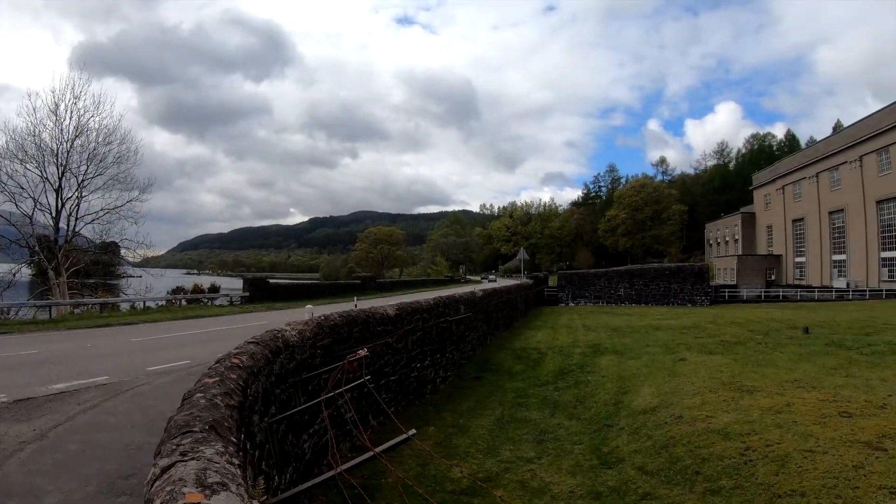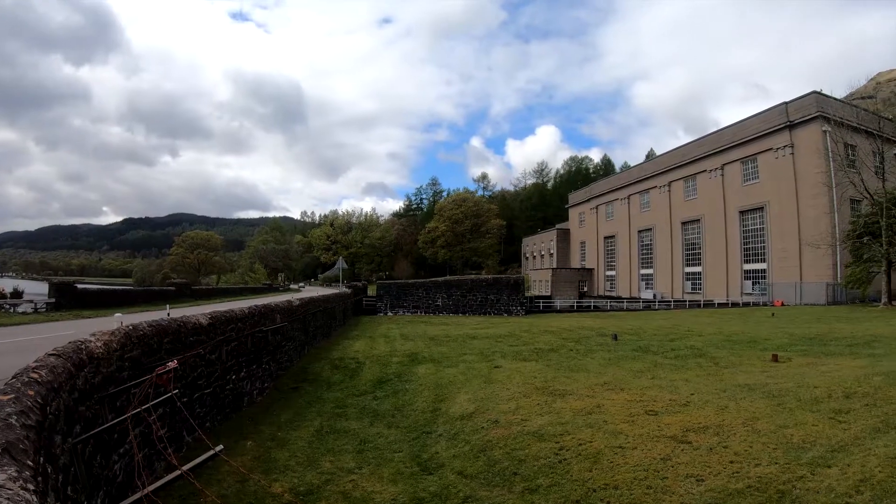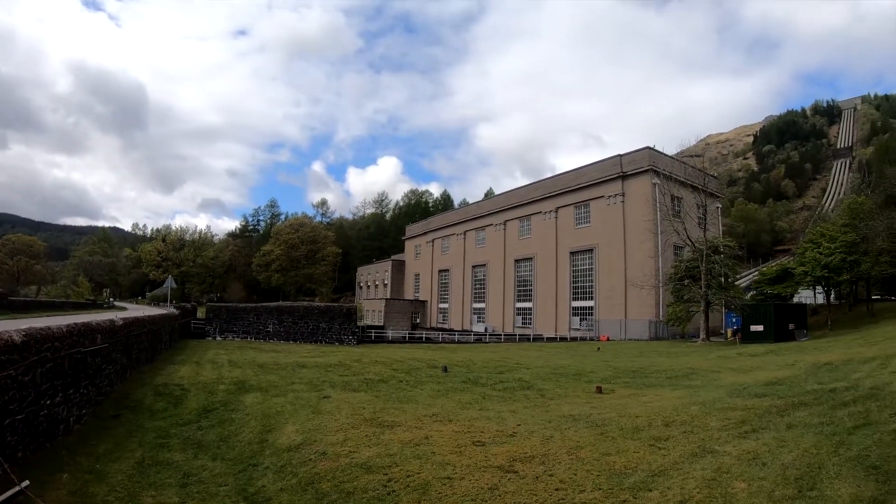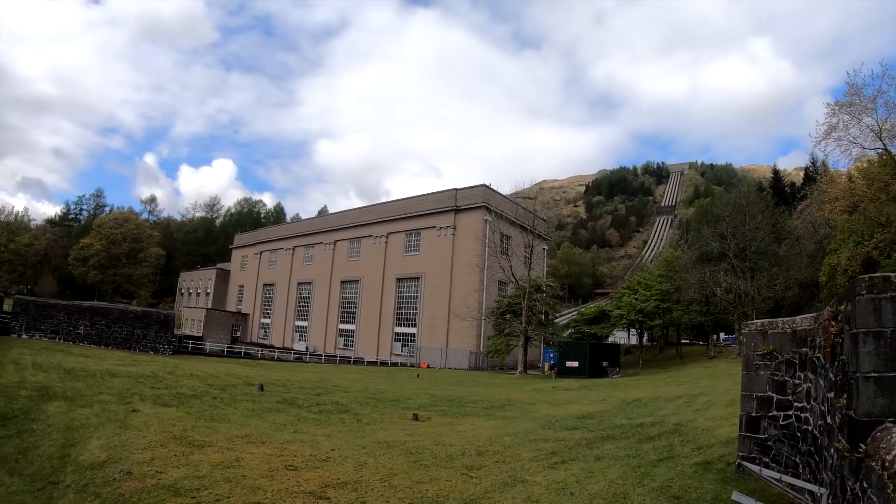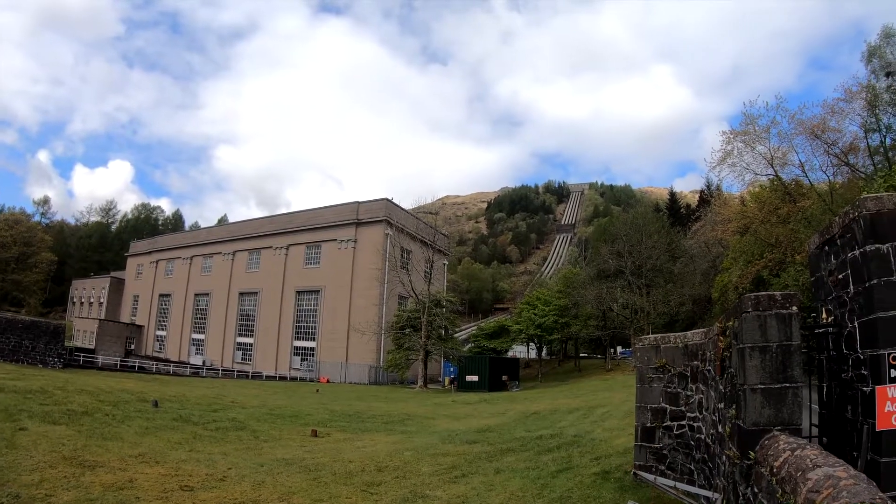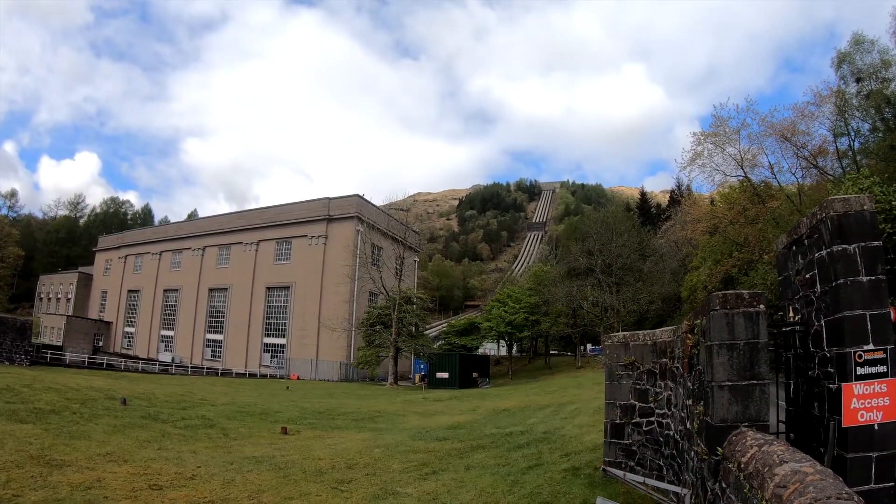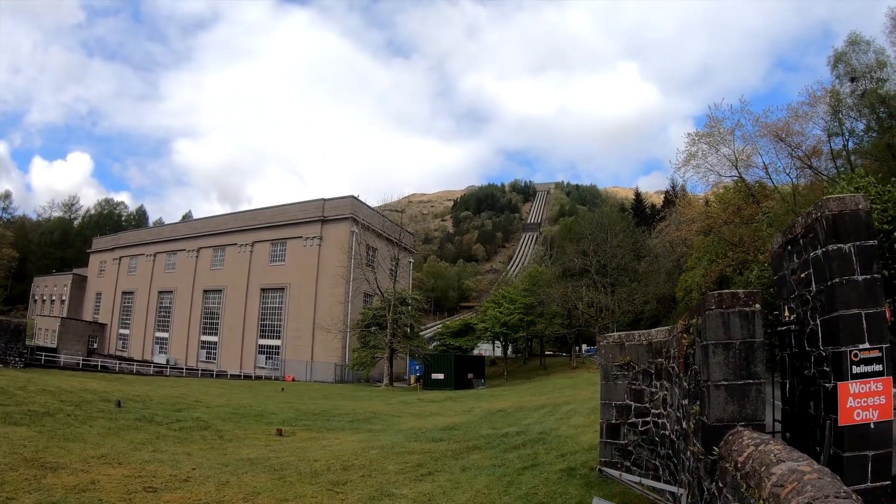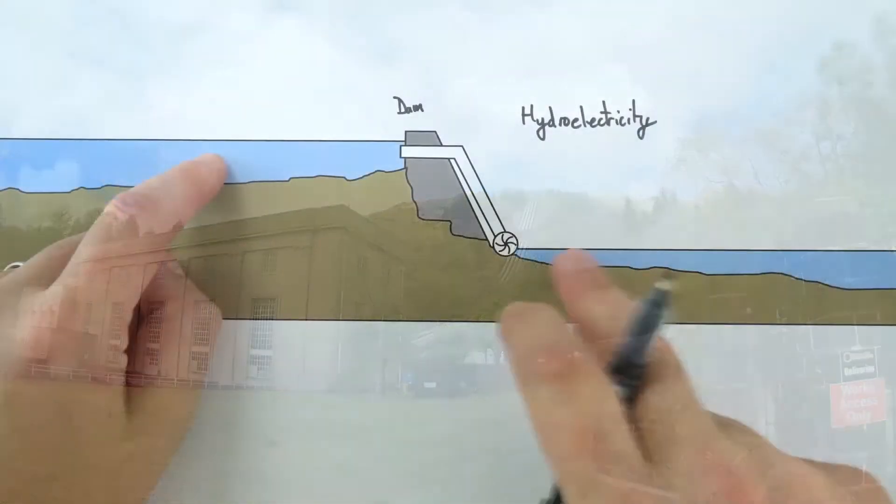Now the great thing about this is that this is a massive store of gravitational potential energy. What we can do with this water is we let it flow through pipes through a turbine, and once we get the turbine spinning that can cause a generator to turn which then generates our electricity. It then keeps going down to the river and then out to the sea.